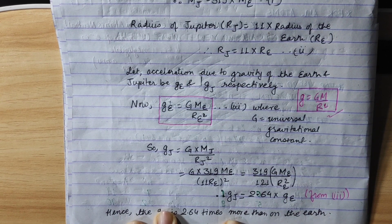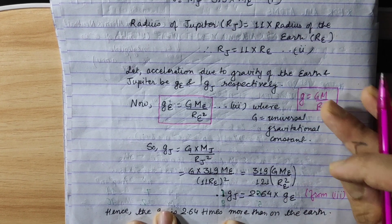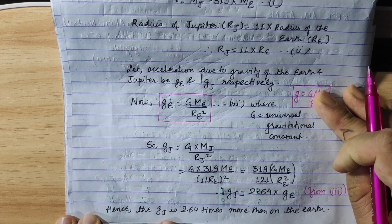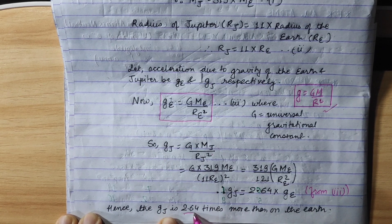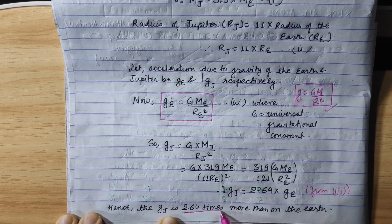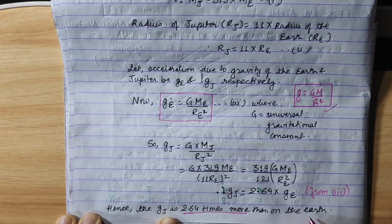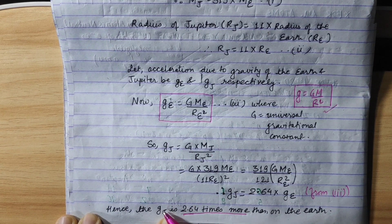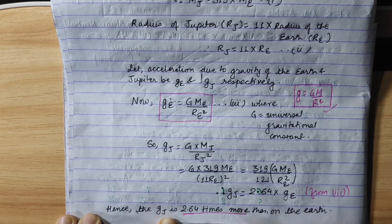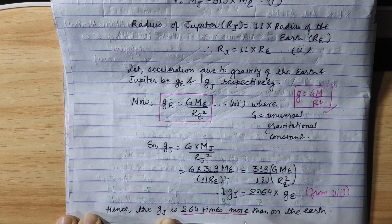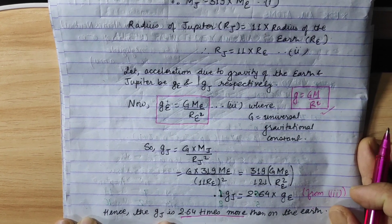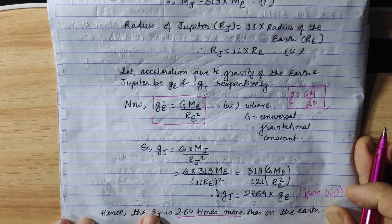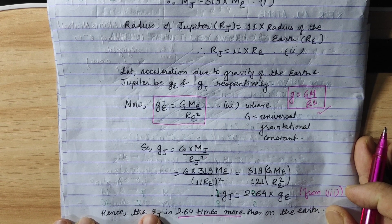Hence the acceleration due to gravity of Jupiter is 2.64 times more than on the Earth. Jupiter's acceleration due to gravity is 2.64 times greater than Earth's. If you have any questions, please comment in the comment box. Thank you.